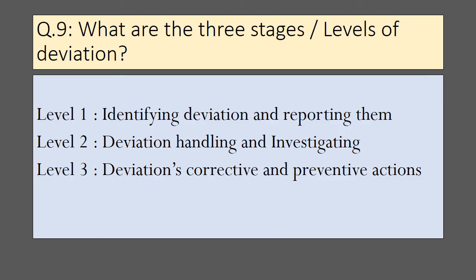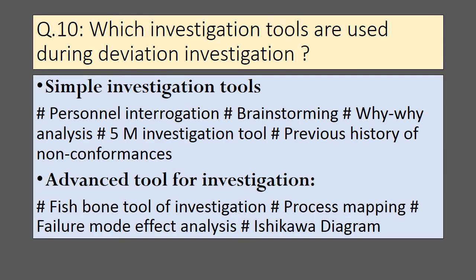What are the three stages or levels of deviation? Level 1 is identifying deviation and reporting them. Level 2 is deviation handling and investigating. Level 3 is deviations corrective and preventive actions.